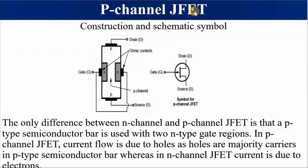P-channel JFET construction and schematic symbol. For a P-channel JFET, the arrow points outward from the P-type channel to the N-type gate. The P-type material between the drain and source is sandwiched between two N-type gate regions. Ohmic contacts allow connection of the gate, drain, and source terminals. The only difference from N-channel is that a P-type semiconductor bar is sandwiched between two N-type gate regions. Current flow in a P-channel is due to holes, whereas in an N-channel it is due to electrons.